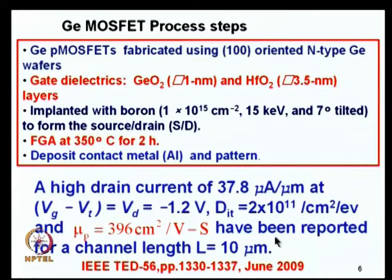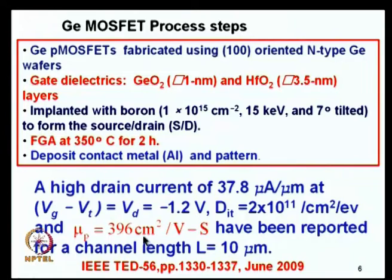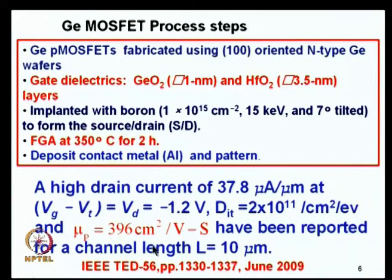A high drain current of 37.8 μA/μm was achieved at Vg − Vth = −1.2 V, with interface state density of 2×10¹¹ cm⁻² eV⁻¹. The effective hole mobility reported was 396 cm²/V·s for a 10 μm channel length device. At that time, this was the best reported on germanium — though the ideal expected mobility for germanium P-channel MOSFETs is 1900 cm²/V·s, so there is still a long way to go.